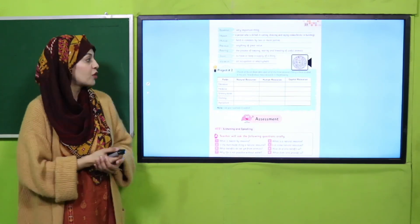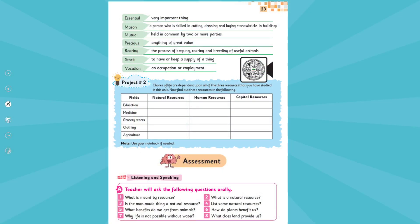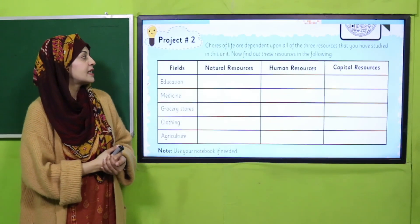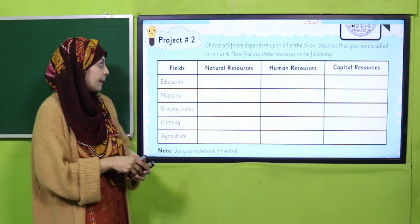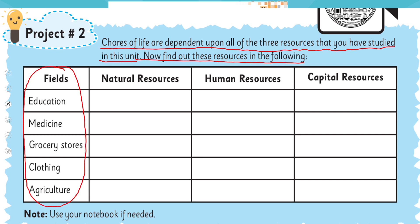Now is the time for project number two, given on page number 23. Quickly open the page. Here you can see project number two. Shows of life are dependent upon all three resources that you have studied in this unit. Now find out these resources in the following fields: education, medicine, grocery store, clothing, and agriculture.